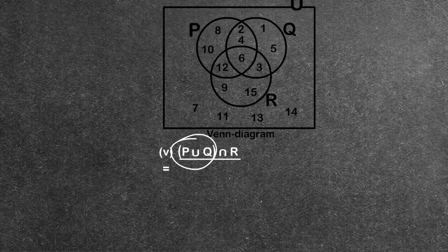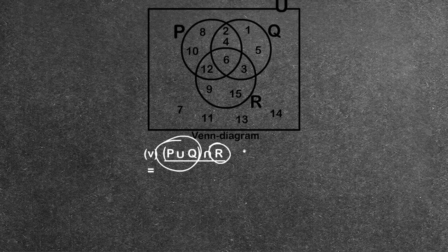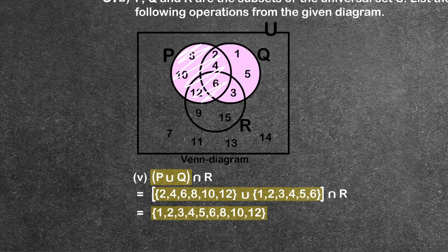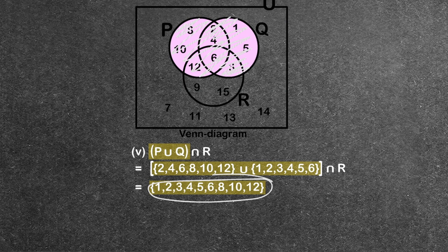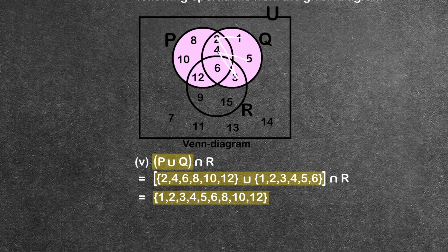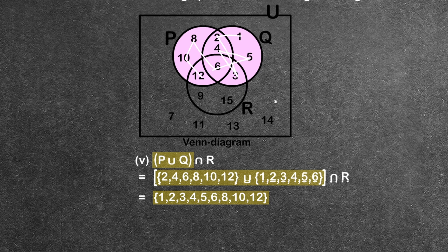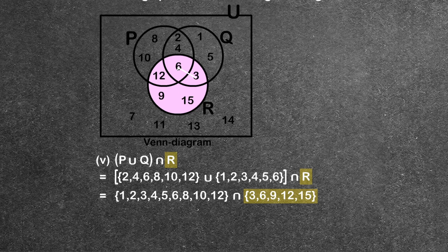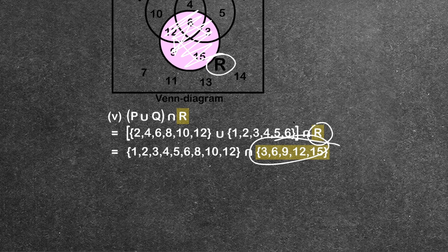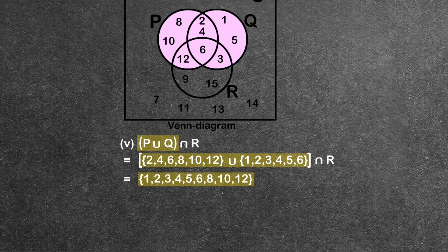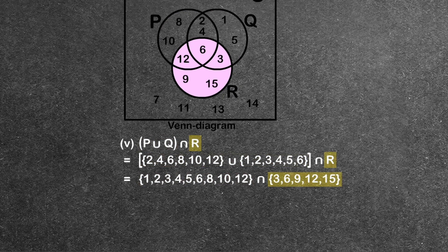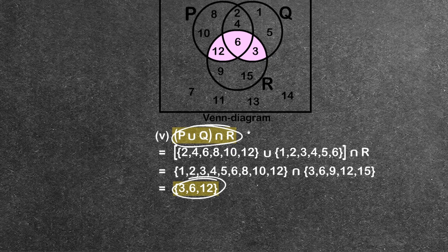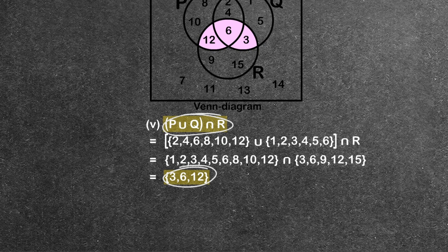P union Q gives us the elements 1, 2, 3, 4, 5, 6, 8, 10, 12. R is the set containing 3, 6, 9, 12, 15. P union Q intersect R gives us the common elements: 3, 6, and 12. So the answer is {3, 6, 12}.